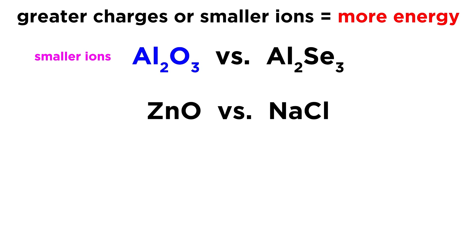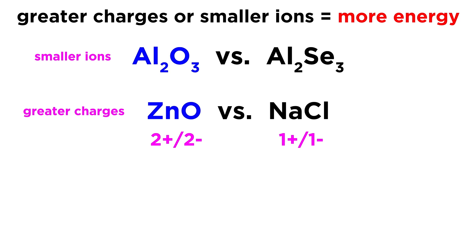For the second example, ZnO versus NaCl — here we do have different charges. Zinc oxide: we know oxides are 2⁻, so zinc must be 2⁺, giving us a 2⁺ cation and a 2⁻ anion. Sodium chloride will be plus 1 and minus 1. Looking at the magnitudes: zinc oxide has 2 and 2 in the numerator versus 1 and 1 — that's a factor of 4. So without even considering interionic distance, ZnO is going to have a greater lattice energy.